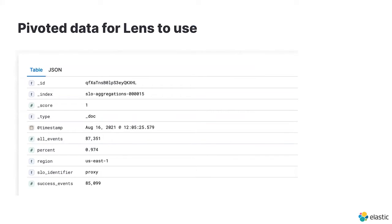Before lens formulas, we were calculating percentage and storing that as well using a bucket script aggregation. But with the introduction of lens formulas, we're using those instead. We're also using ingest pipelines to allow us to enrich the data as required with things like local region, cloud provider, and SLO identifier. What we end up with is a number of documents rolled up over one minute that includes details about region, SLO identifier, as well as the number of successful events, total events, and before lens formulas, also percent. We then use this data to feed our visualizations both regionally and globally.